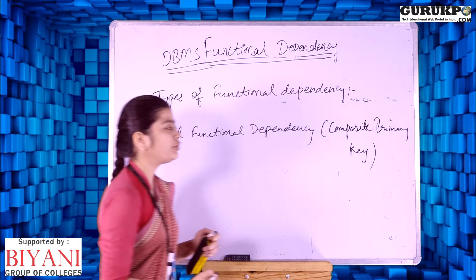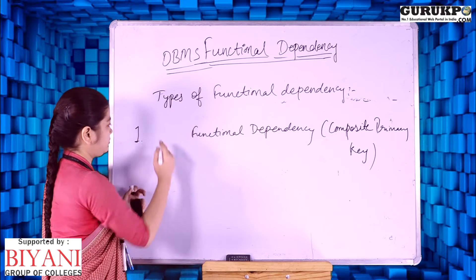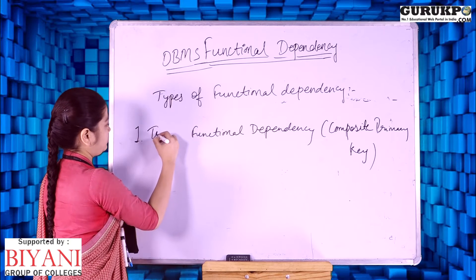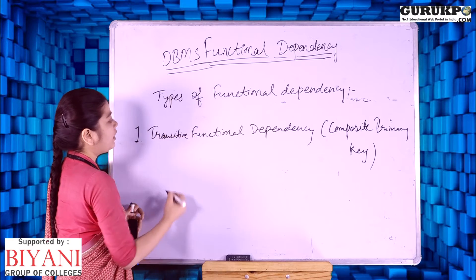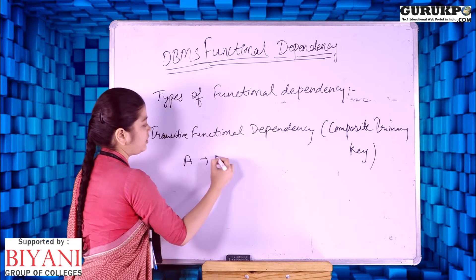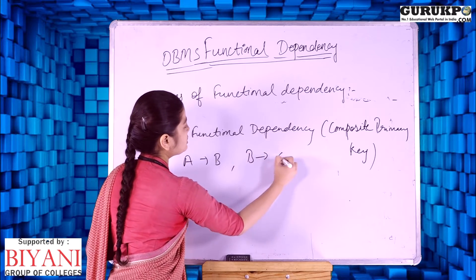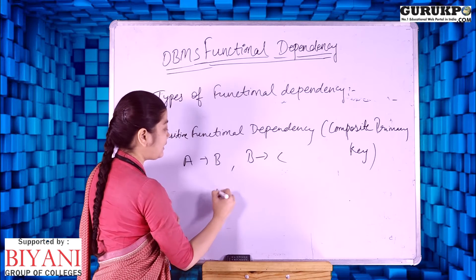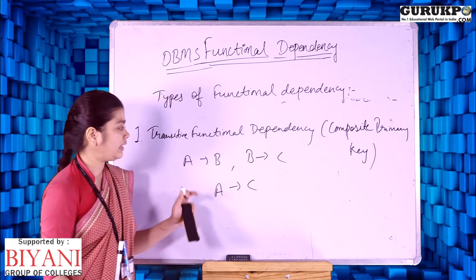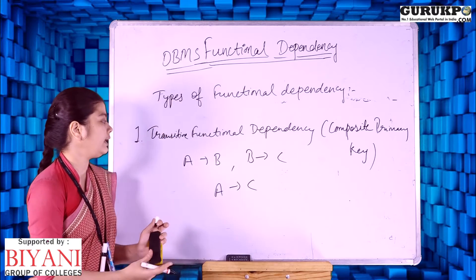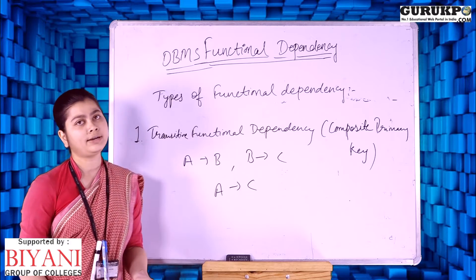The third type is transitive functional dependency. Here, if a depends on b and b depends on c, then indirectly a depends on c. So here we can say the dependency between a and c is a transitive functional dependency.